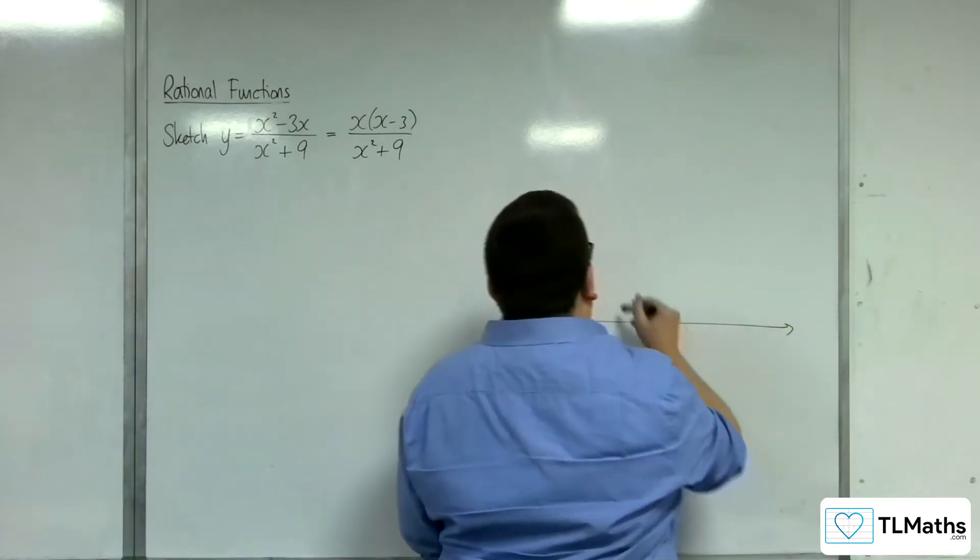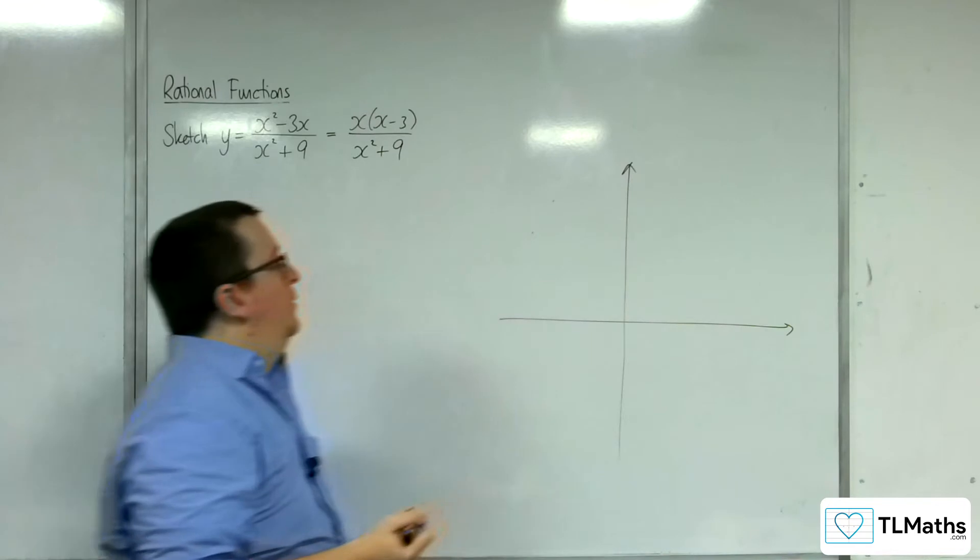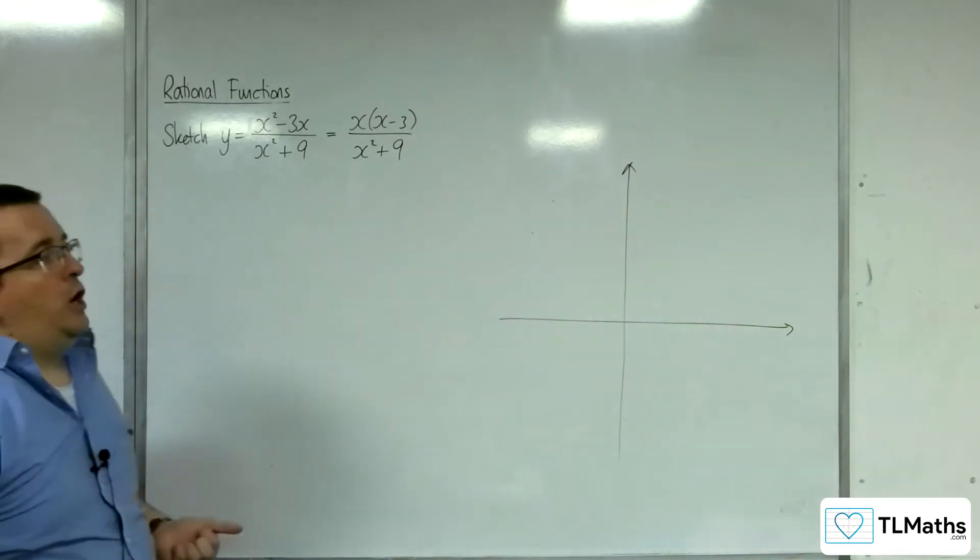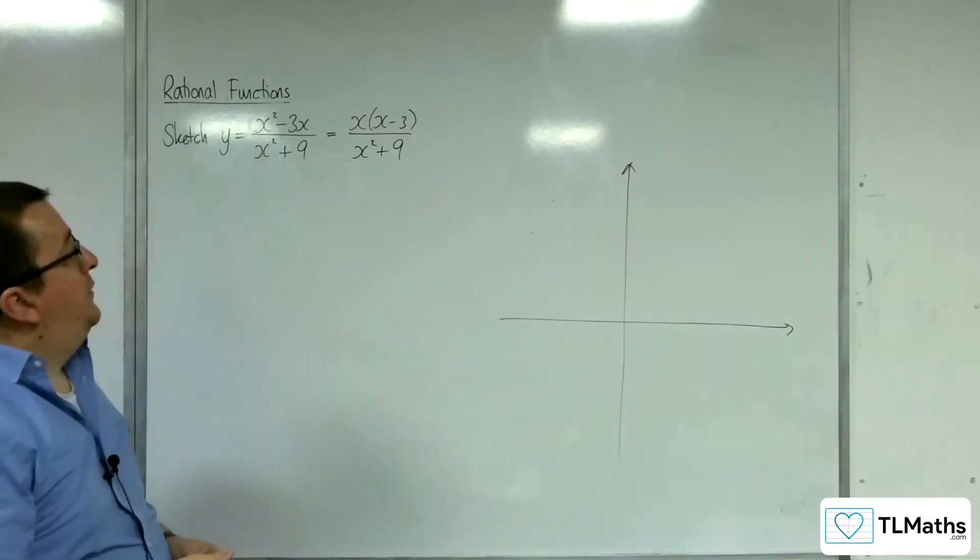Okay, so first thing to check: vertical asymptotes, where the denominator is 0.